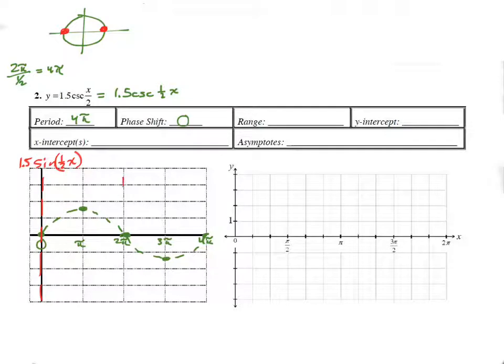Wherever sine is crossing the midline, that is where sine equals 0. So I'm going to draw asymptotes wherever sine is crossing the midline. Now, in this case, the midline is the x-axis, but that's not always the case.